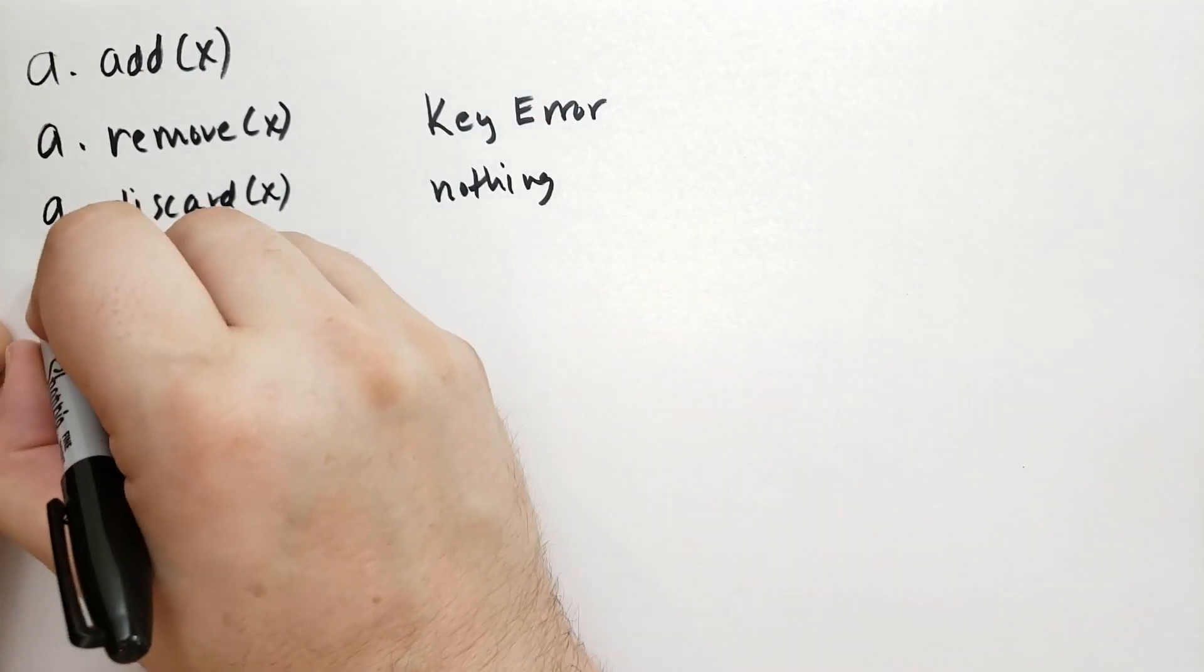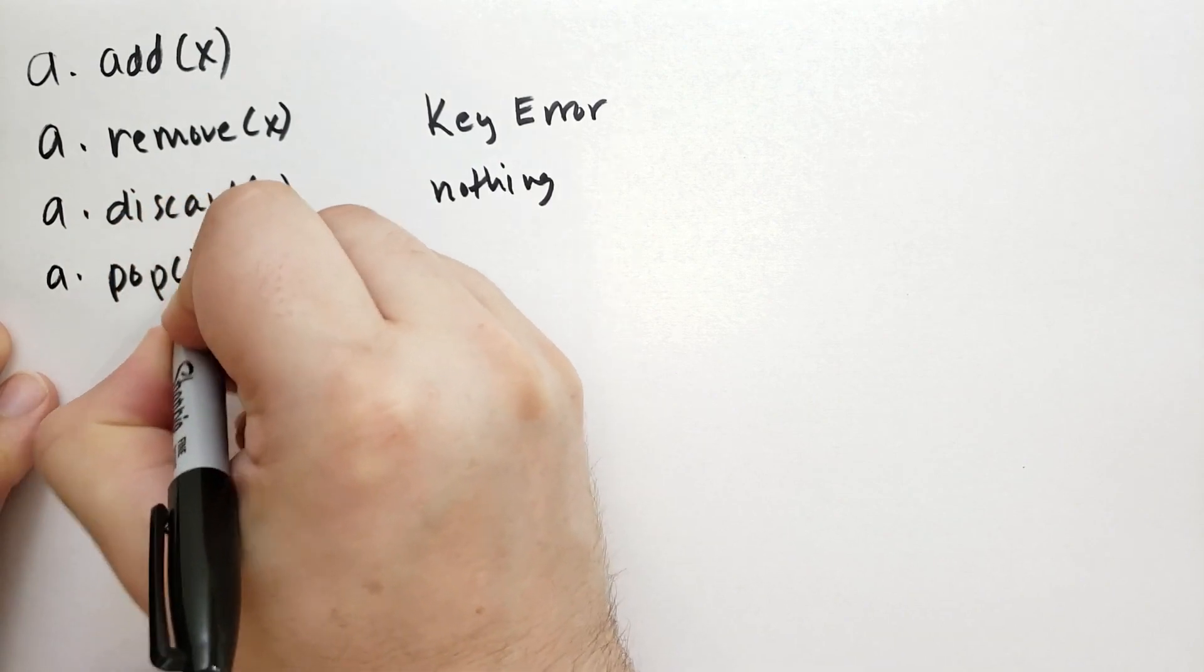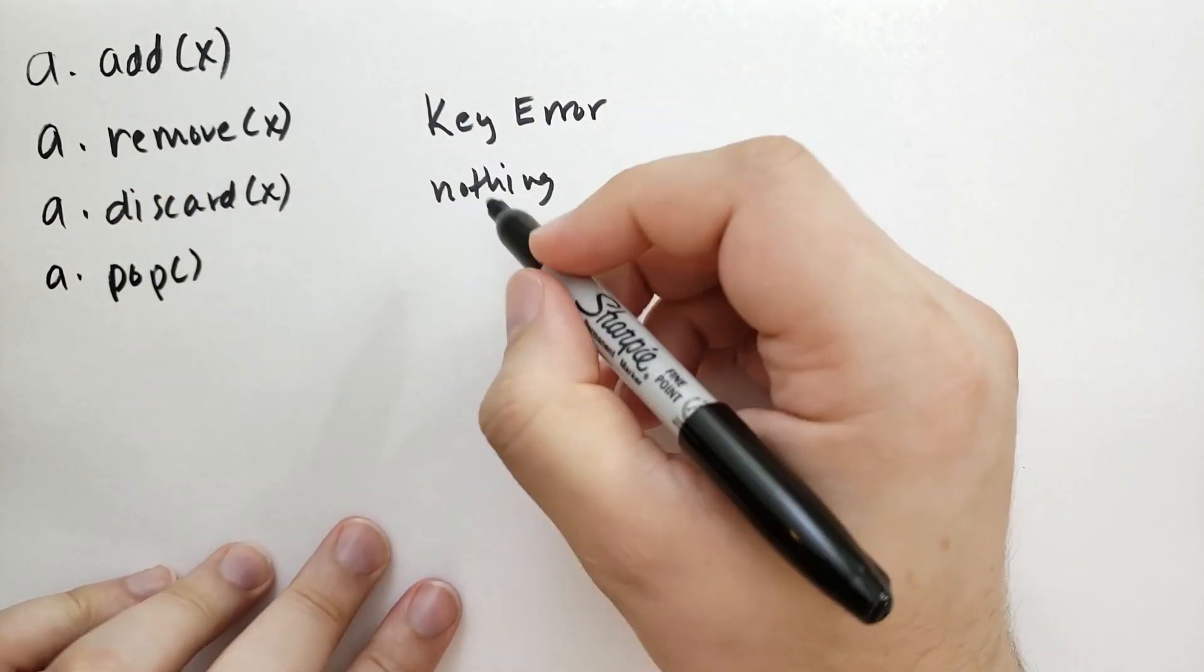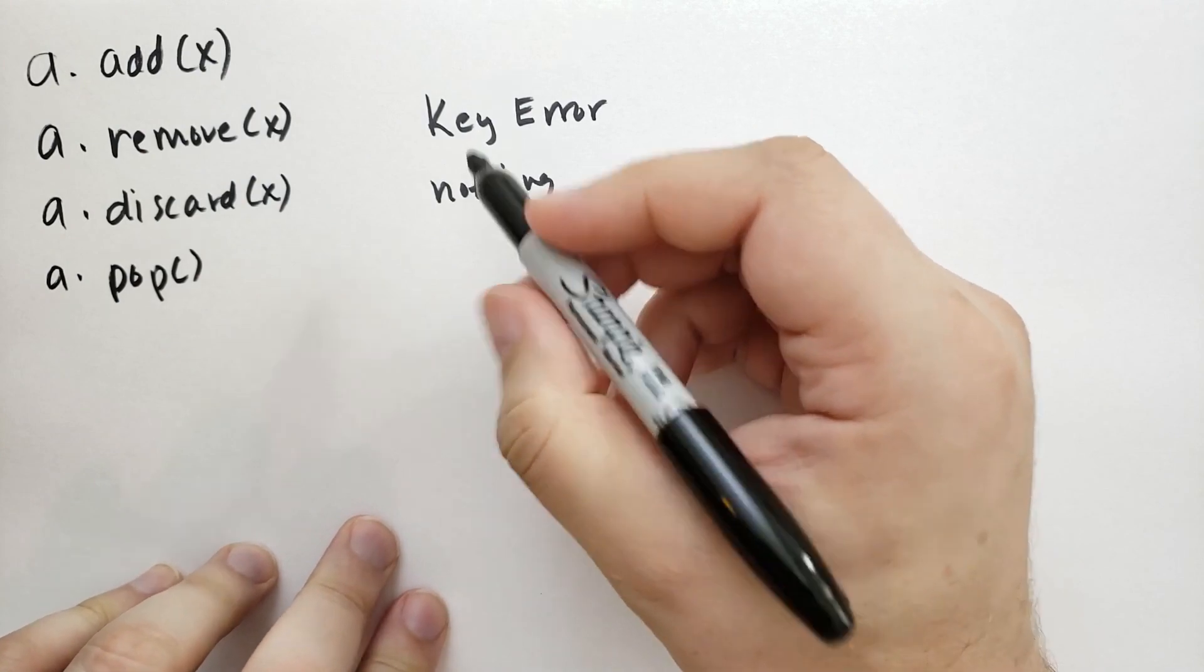OK, there is also pop, which will return a value from the set. If the set is empty, it will raise a key error.